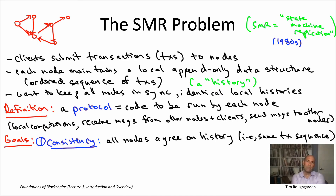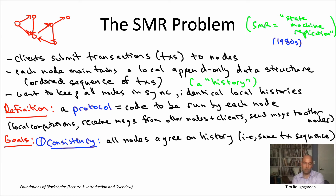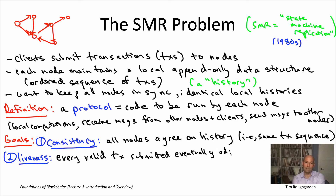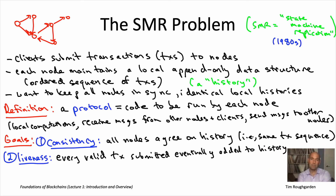If the only thing we cared about was consistency, SMR would not be a hard problem. Here's an easy way to ensure all nodes always have the same history: never add anything to anybody's history — literally do nothing. All nodes will always have the empty sequence and will always be in sync. Obviously that's not what we have in mind. So we need a liveness property: transactions submitted by clients that are eligible to be added should eventually be added. When there's work to be done, the nodes should actually do it.